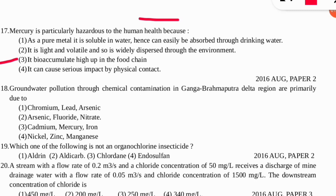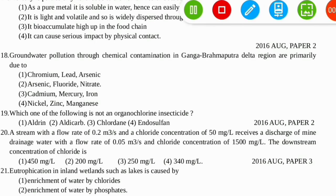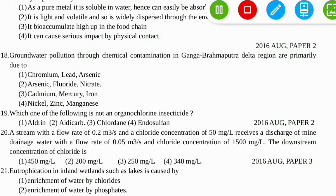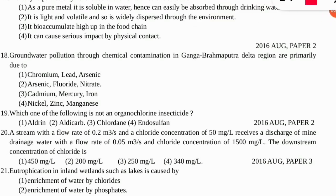The eighteenth question: groundwater pollution through chemical contamination in the Ganga-Brahmaputra delta region is primarily due to which elements? The correct option is number two — arsenic, fluoride, and nitrate are the major reasons for groundwater contamination. The nineteenth question: which of the following is NOT an organochlorine insecticide? The correct option is number two — Aldicarb, as it is an organocarbonate pesticide.